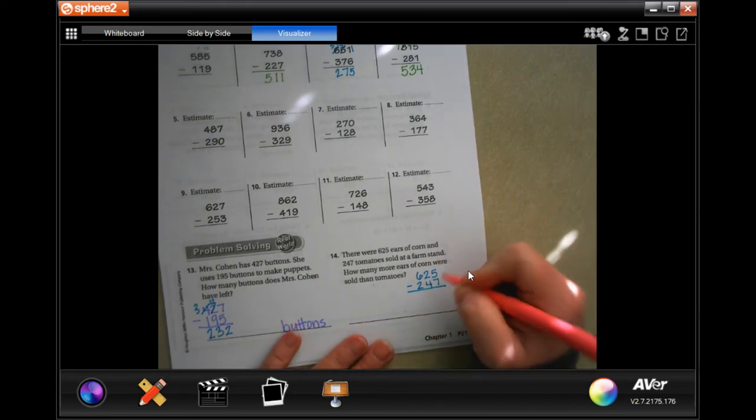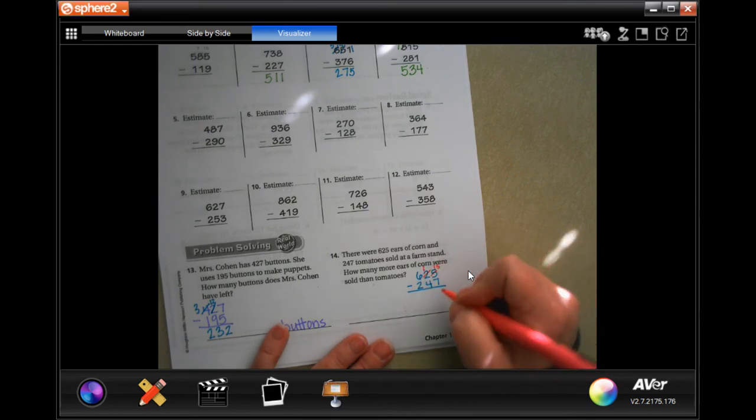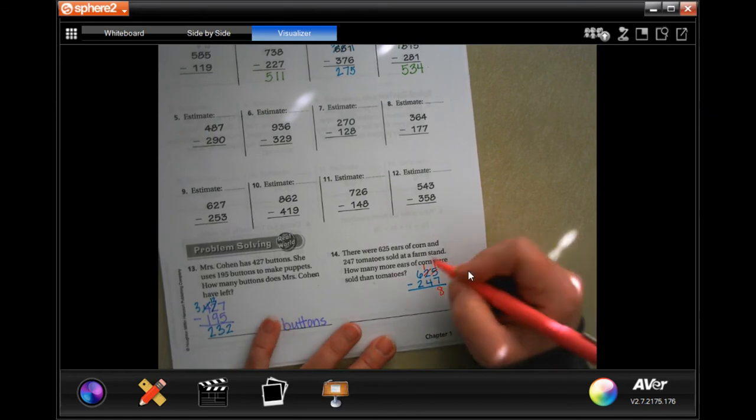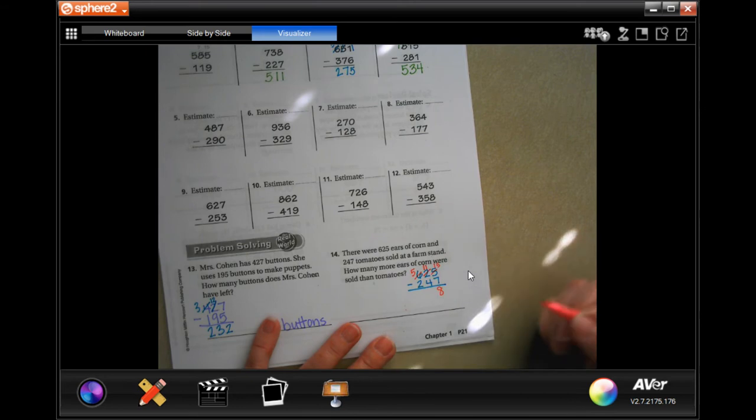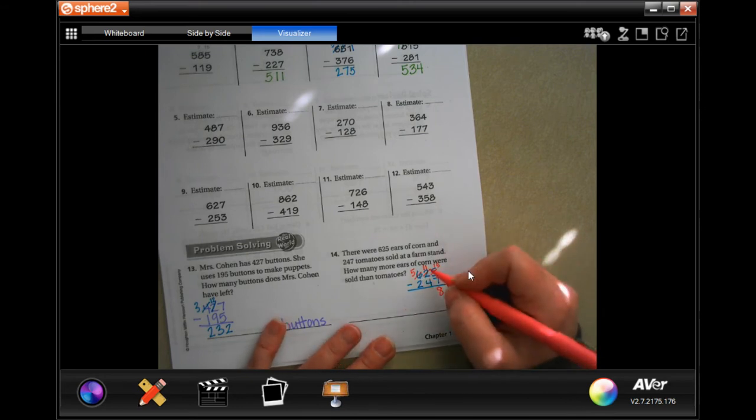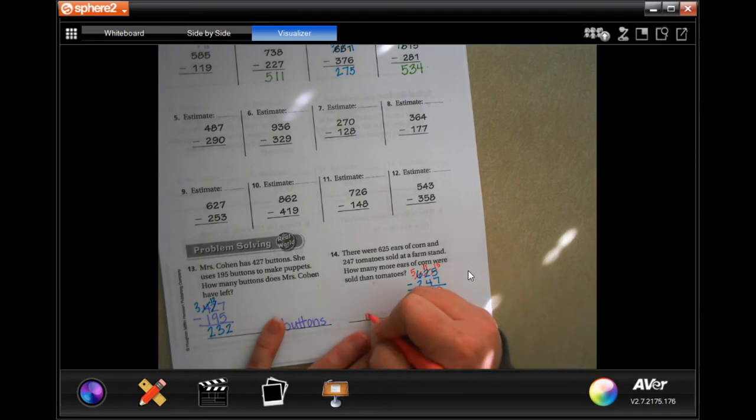So, 5 cannot take away 7. We are going to borrow 1, making that a 1 and this a 15. 15 take away 7 is 8. 1 cannot take away 4. We are going to borrow 1, making that 11 and that a 5. 11 minus 4 is 7 and 5 minus 2 is 3. So, 378 more corn.